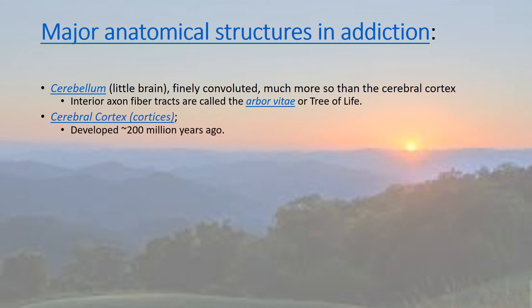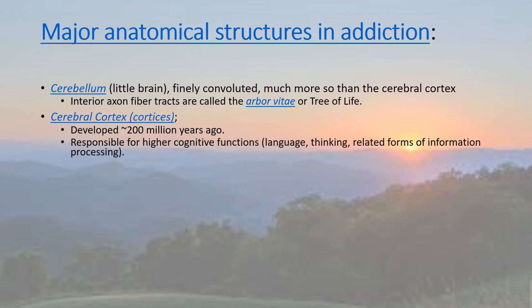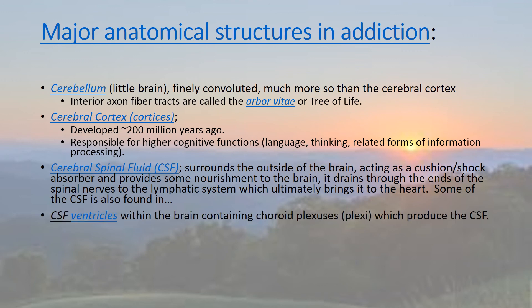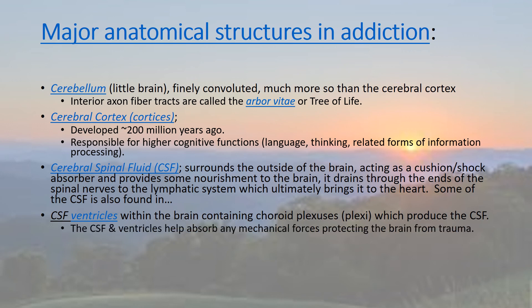Other important aspects of the brain: cerebrospinal fluid surrounds the outside of the brain, acting as a cushion or shock absorber and providing nourishment to the brain. It also drains through the ends of the spinal nerves into the lymphatic system, which ultimately brings that fluid to the heart, where it's redistributed through the body and to the kidneys for excretion. Inside the brain, there are hollow cavities called ventricles that are also filled with cerebrospinal fluid. The spinal fluid is produced in the choroid plexuses located within the ventricles.